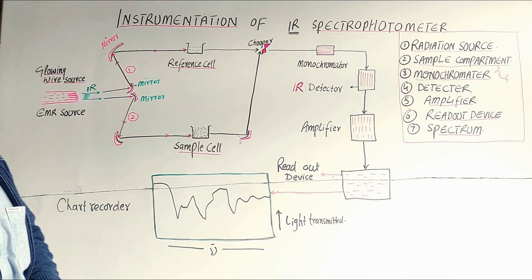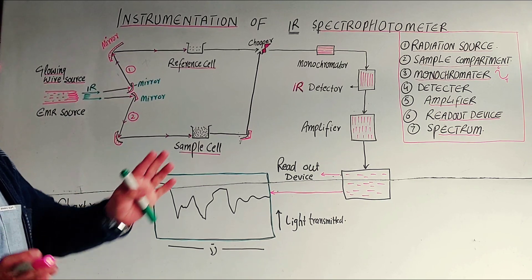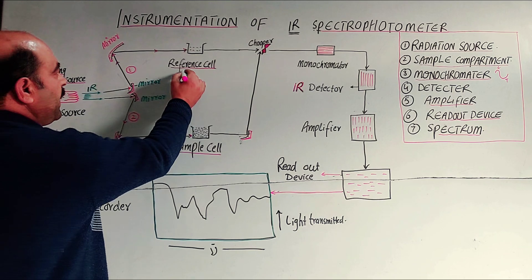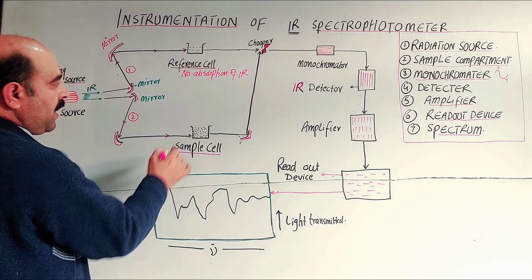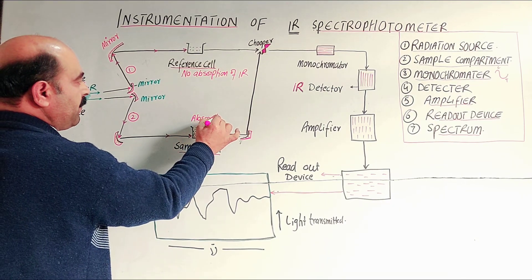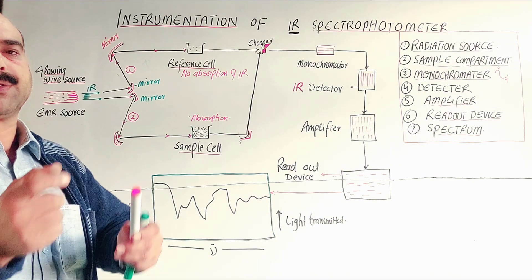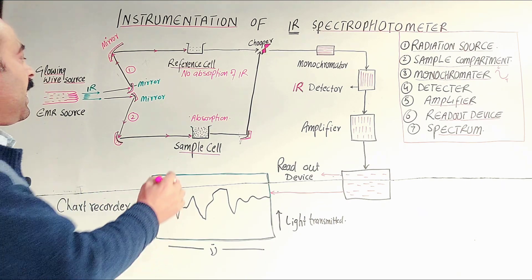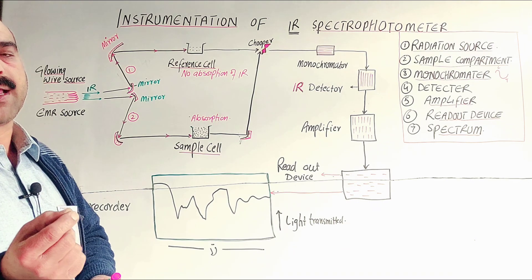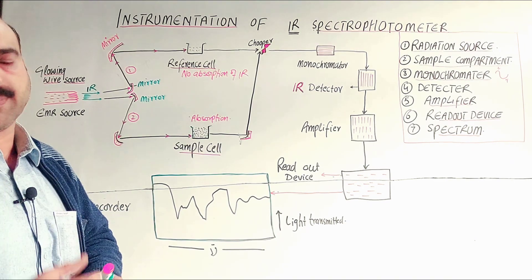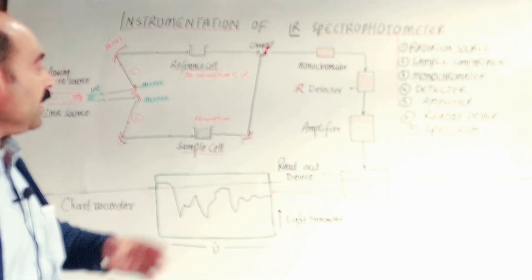In the reference cell, because there's no solute, no bonds like stretching, bending, or rotation, there is no absorption of IR radiations. But in the organic sample in the sample cell, the same wavelength of IR radiation, the same wave number, energy, and frequency is absorbed for bond rotation, bond stretching, and bending.